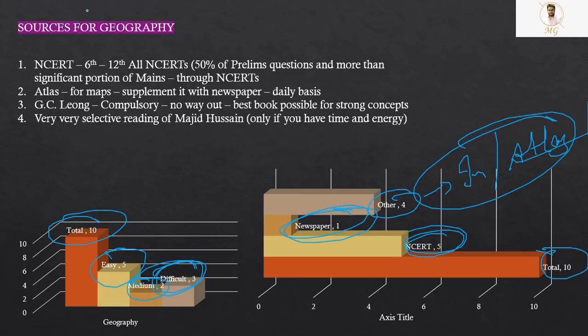And it is not practically advisable to chase such questions. So out of the 10 questions, 5 can be directly solved from NCERTs, 1 from newspaper and 4 from other sources that is internet, Google, and Atlas.